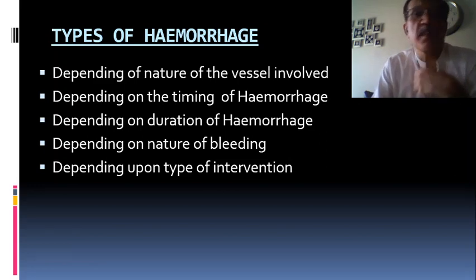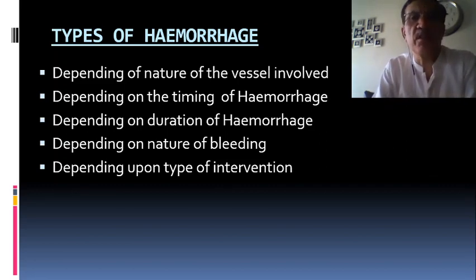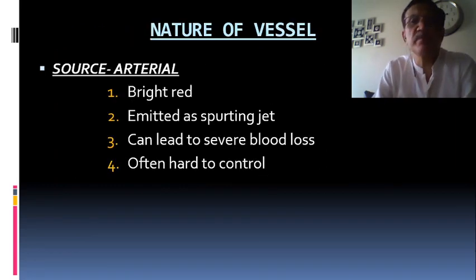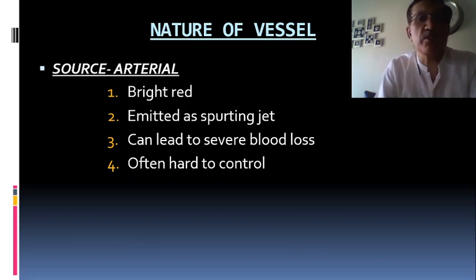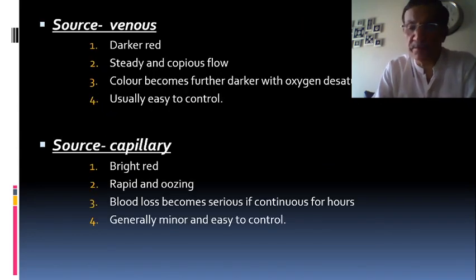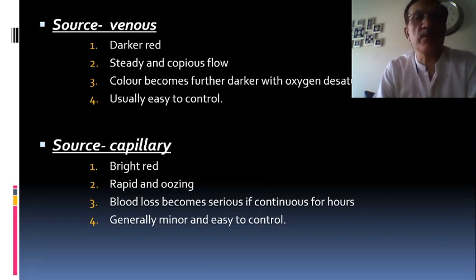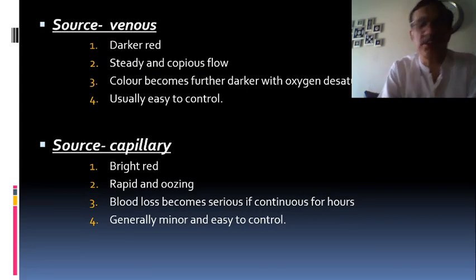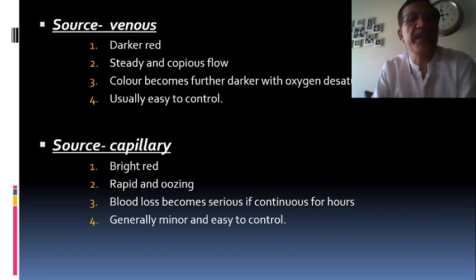Types of hemorrhage can be classified depending on the nature of the blood vessel involved. Arterial bleeding is bright red with an immediate spurting jet, can lead to severe blood loss, and is often hard to control. Venous blood loss produces much darker blood in a steady continuous flow, becoming further darker as oxygen decreases — usually easy to control with simple pressure. Capillary bleeding is bright red and oozing; blood loss becomes serious if it continues for hours but is generally minor and easy to control.